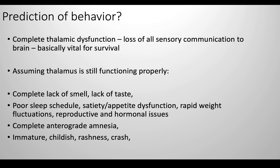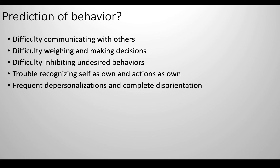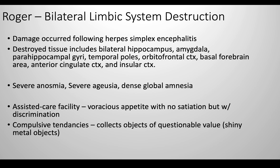Now I'm going to discuss an actual case study and the behaviors that resulted and why. Feinstein et al. describes a patient known as Roger, who has been studied in their laboratory for over 14 years. Roger suffered bilateral brain damage encompassing a substantial portion of his limbic system, occurring following an episode of herpes simplex encephalitis. It destroyed neural tissue bilaterally in the hippocampus, amygdala, parahippocampal gyri, temporal poles, orbitofrontal cortex, basal forebrain area, anterior cingulate cortex, and insular cortex. When Roger was discovered to have herpes simplex encephalitis, he was rushed to the hospital and in a coma for nine days. He slowly stabilized and was eventually discharged.